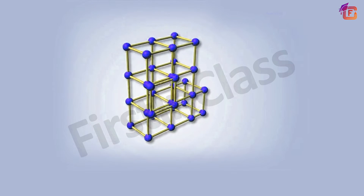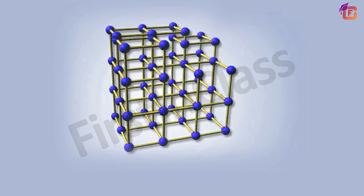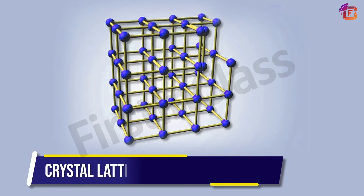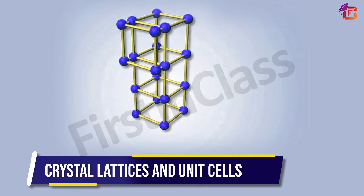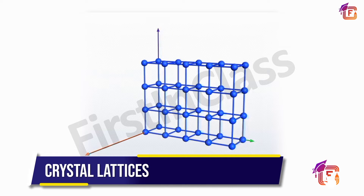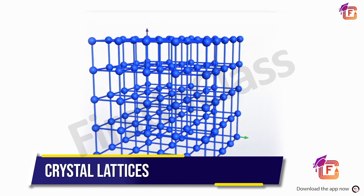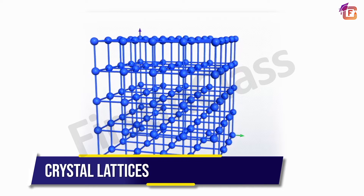Hello learners, welcome to this video. In this video we are going to learn about crystal lattices and unit cells. The first question that comes to mind is: what is a crystal lattice? A crystal lattice, which is also known as a space lattice, is the three-dimensional regular arrangement of points in space.